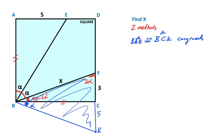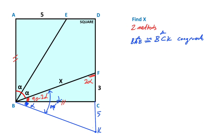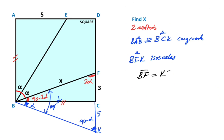If you focus on this triangle, here is 2-alpha and here is 90 minus alpha. That means 90 minus alpha is left here, therefore we get an isosceles triangle. So triangle BFK is an isosceles triangle, which means length BF must equal length KF. Therefore x must equal 8 units. That is the second method.